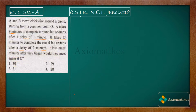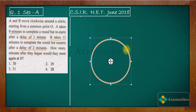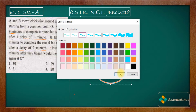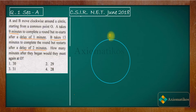So let us say this is your circle on which they are moving, and this is the point O from where they will begin. It is given to us that they will move in a clockwise direction and they will start from the same common point O at the same time. So they are going to start from this common point O simultaneously.